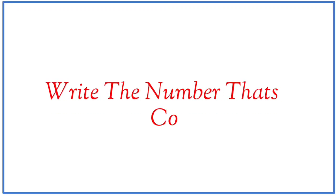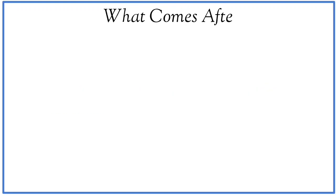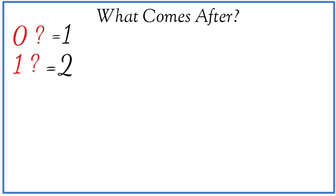Write the number that comes after. What comes after zero? One. What comes after one? Two. What comes after two? Three.